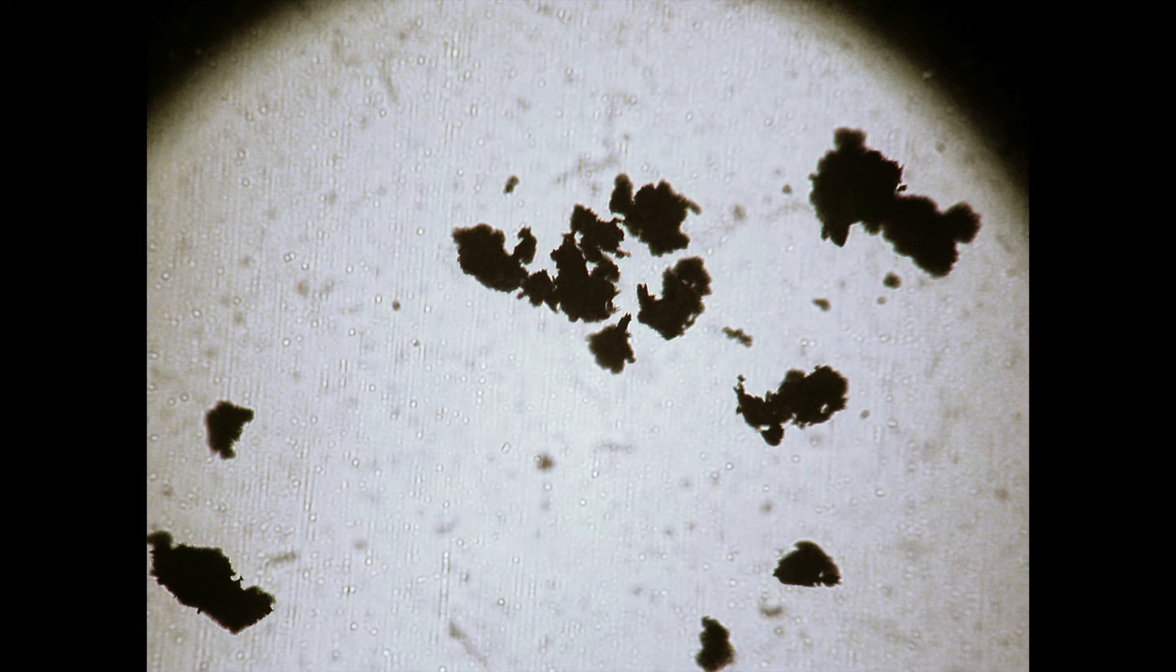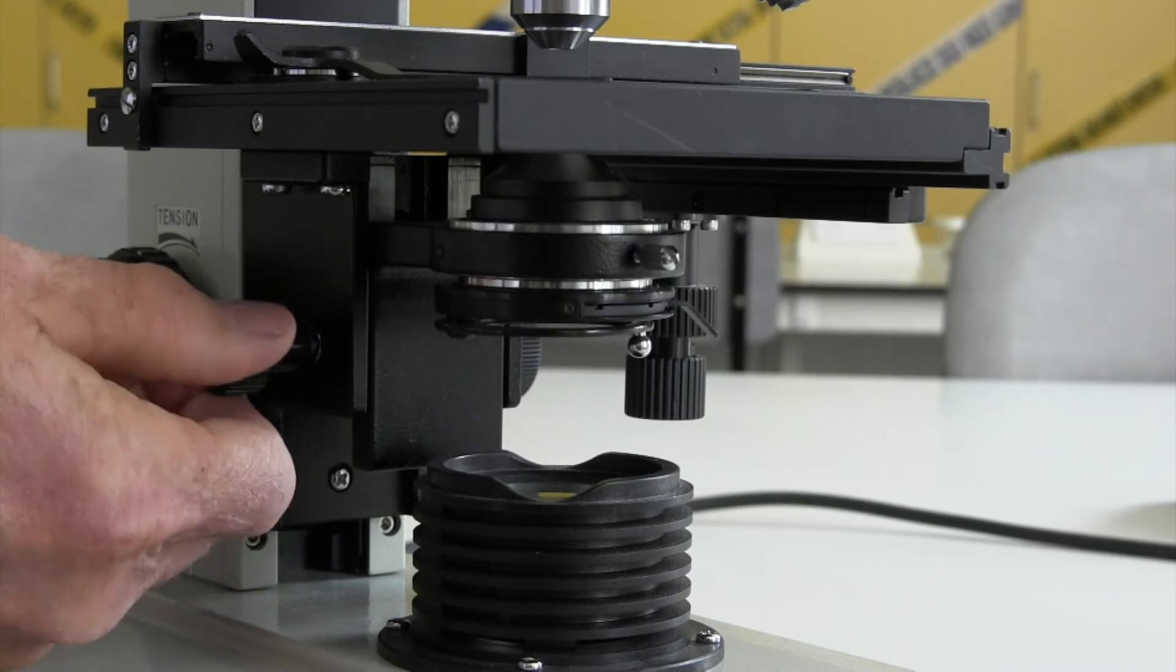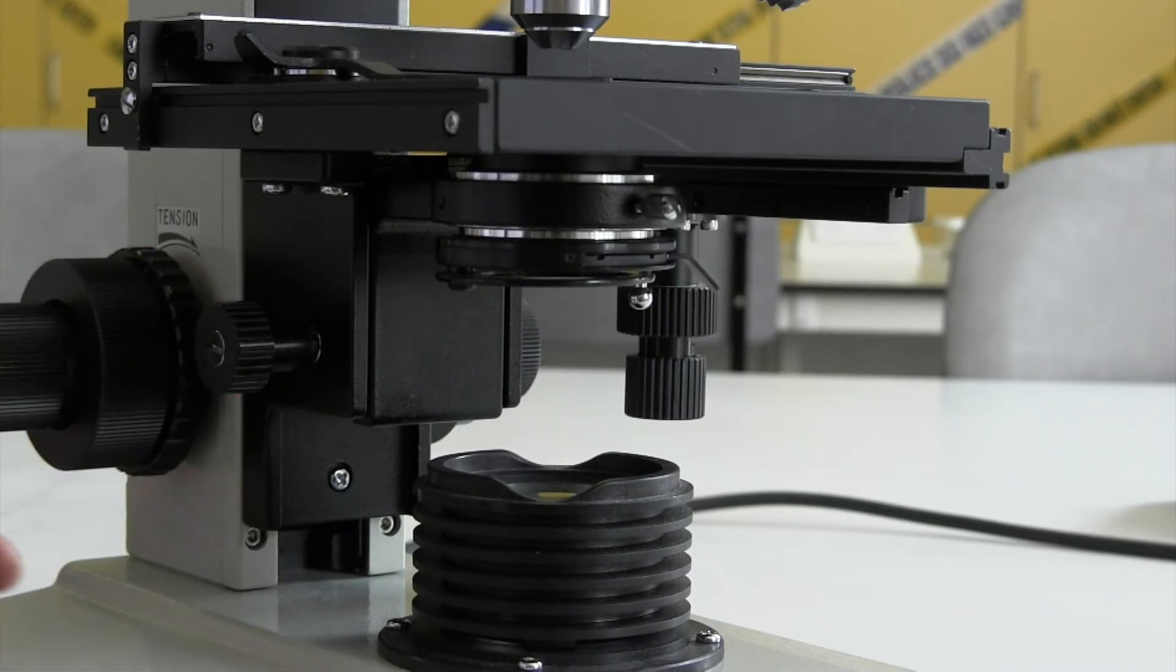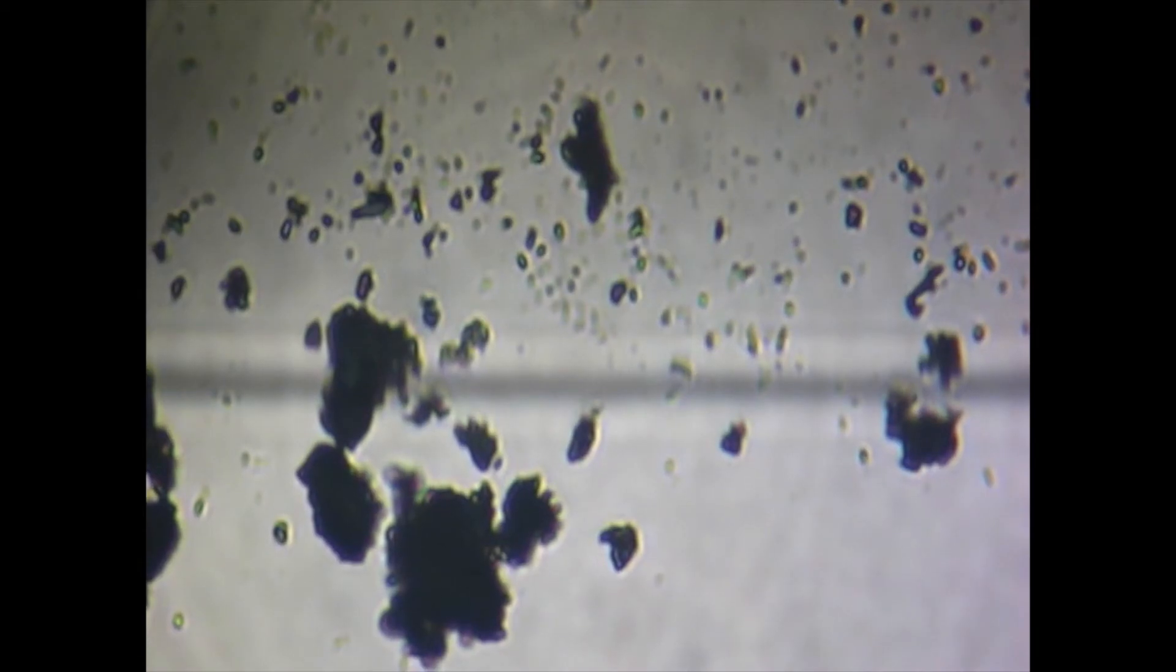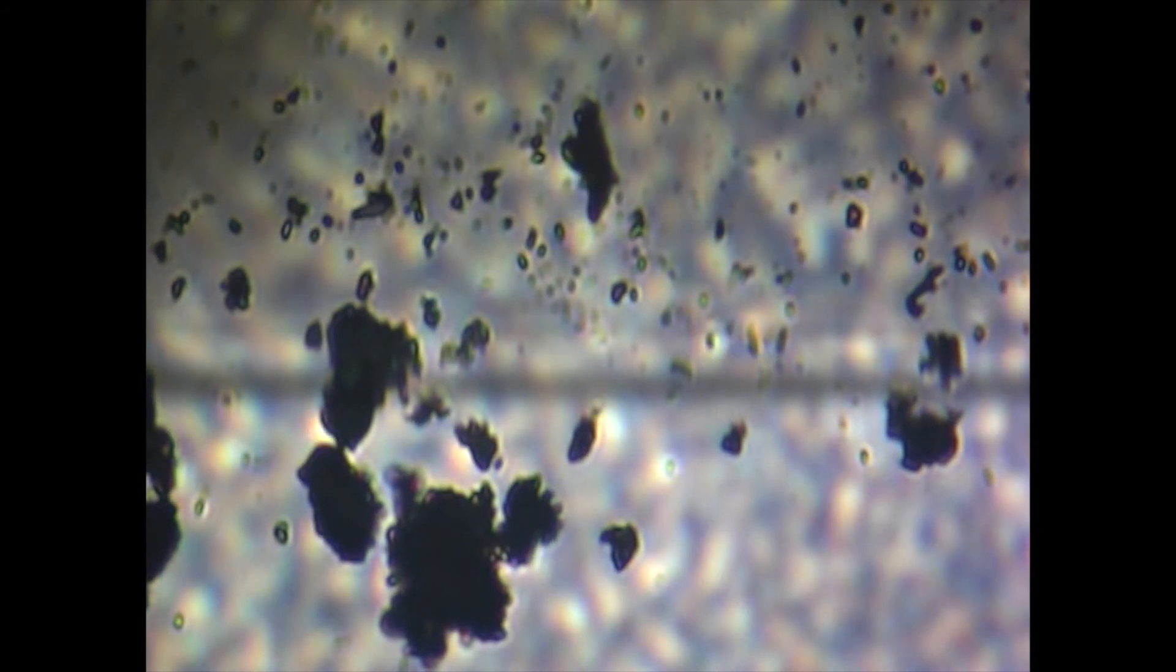The next step is to wind the condenser up to its stop point using the knob under the stage. Now look at your mark using the eyepieces and wind the condenser back down slowly until suddenly the background of your view will appear speckled or mottled as seen here.